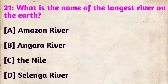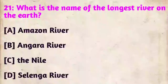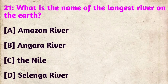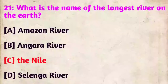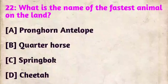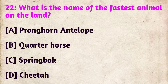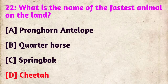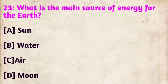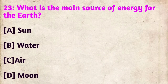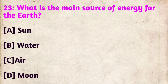Question 21: What is the name of the longest river on the earth? The correct answer is the Nile. Question 22: What is the name of the fastest animal on land? The correct answer is the Cheetah. Question 23: What is the main source of energy for the earth? The correct answer is the Sun.